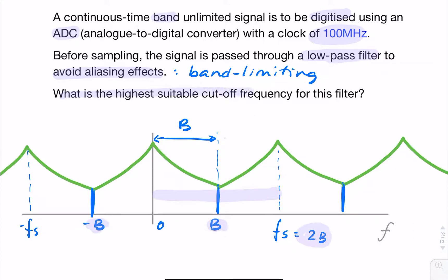So the question asks: what is the highest suitable bandwidth for the filter? This bandwidth is going to be one-half of 100 MHz, so it'll be 50 MHz. If you know your sampling frequency, you should filter the signal so the highest frequency is at most half that sampling frequency. This is like the Nyquist theorem backwards: rather than taking the bandwidth and doubling it, you take the sample rate and halve it. So 50 MHz would be your final answer.